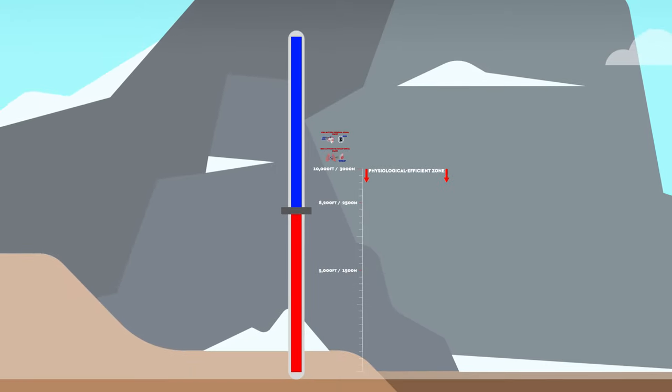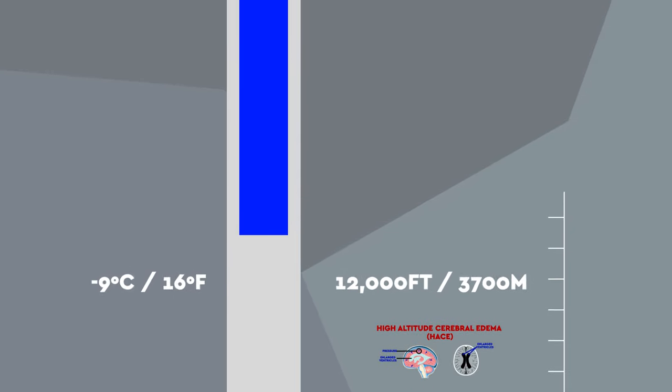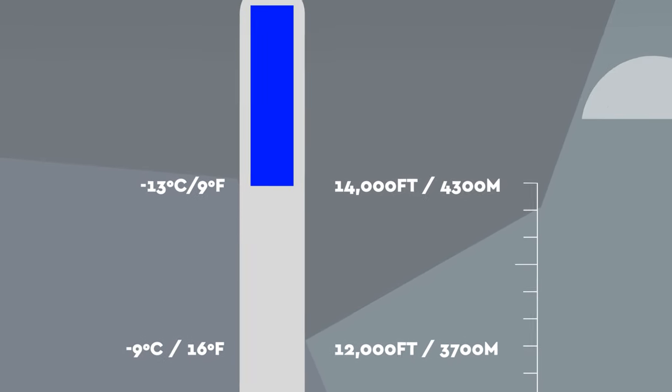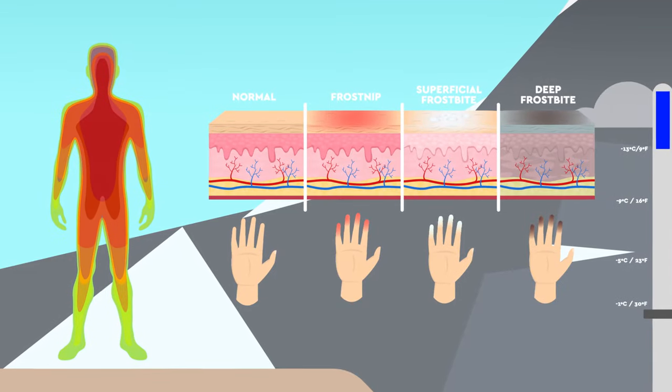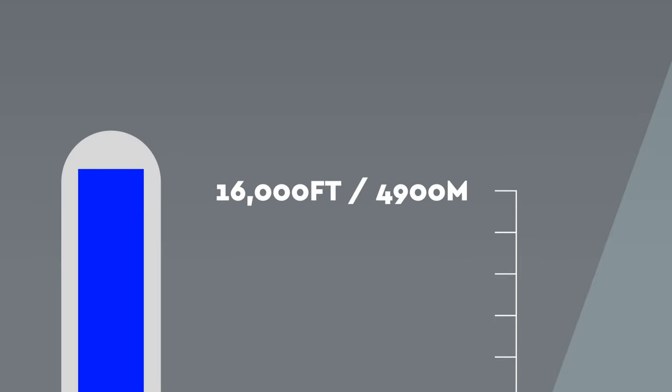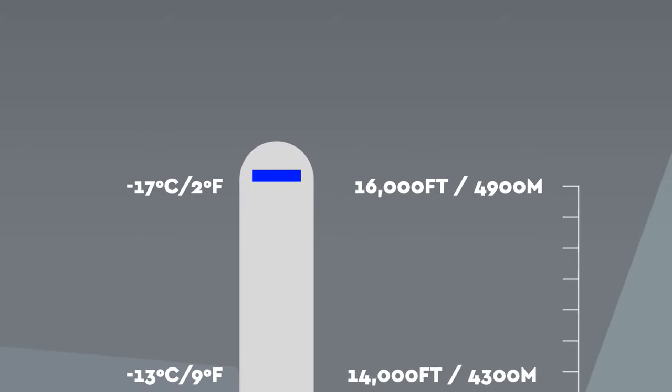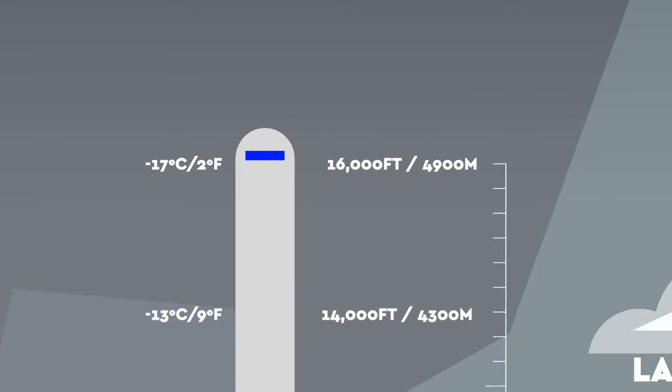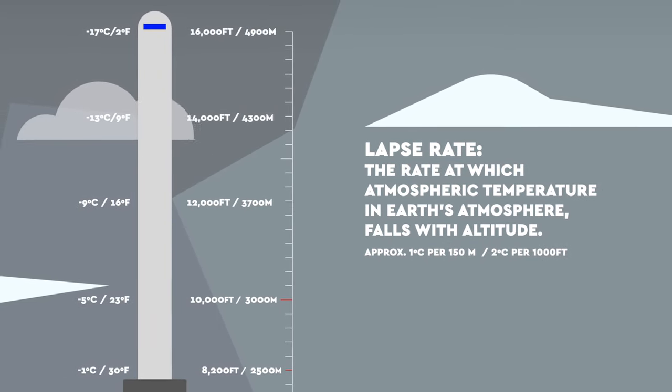If you don't suffer acute mountain sickness, then from this height upwards, the temperature will typically drop below zero, then continue to decrease the higher you go, meaning you are also more likely to suffer frostbite as your blood is diverted from your extremities and towards your core. At 16,000 feet, you'll be trying to survive in temperatures of minus 17 degrees Celsius. These temperatures will vary according to the lapse rate, which is dictated by the humidity of the air.